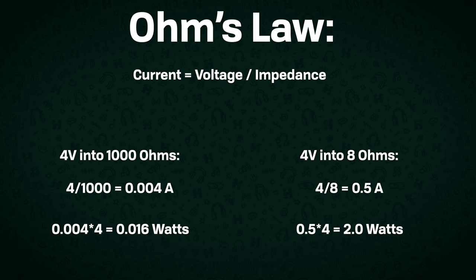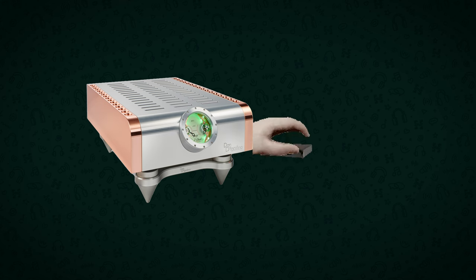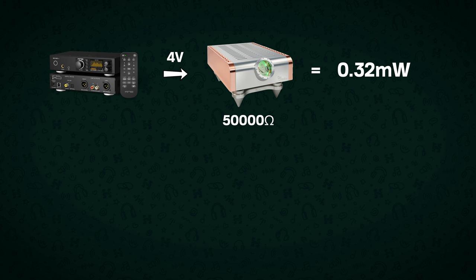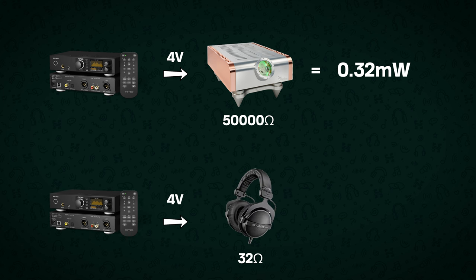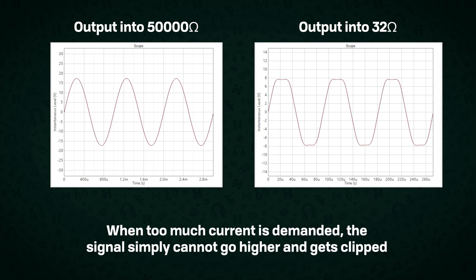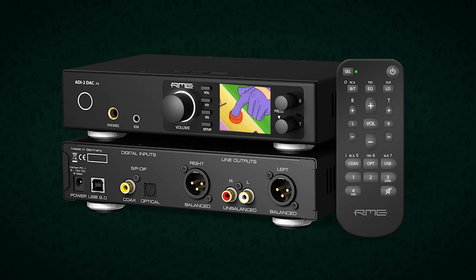The lower the impedance, the more current and therefore power will be demanded for the same voltage. Amplifiers are designed to present a high impedance load to the DAC to make it easier for them. If you output 4 volts from a DAC into your amp, which has an input impedance of say 50,000 ohms, and therefore only pulls 0.32 milliwatts, it's fine. However, if you try to output 4 volts from your DAC directly into a 32 ohm headphone, which would require about 500 milliwatts, it simply doesn't have the ability to provide the necessary current. And so the signal voltage itself will just start to clip and distort — it doesn't follow the waveform instructed by the original signal because it doesn't have the power to move the driver enough to do so.